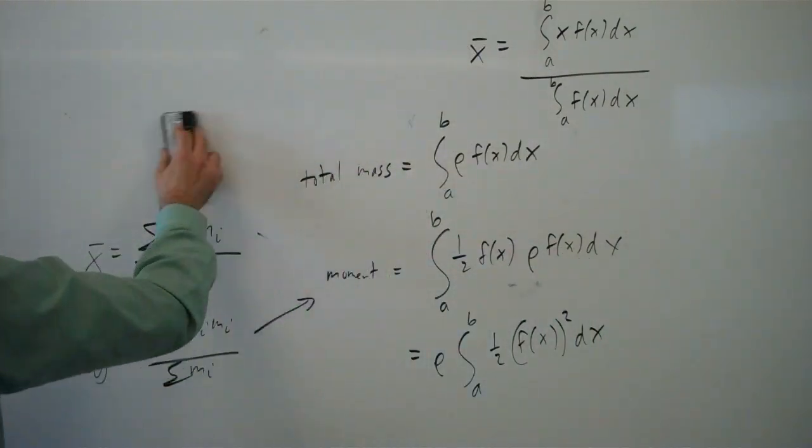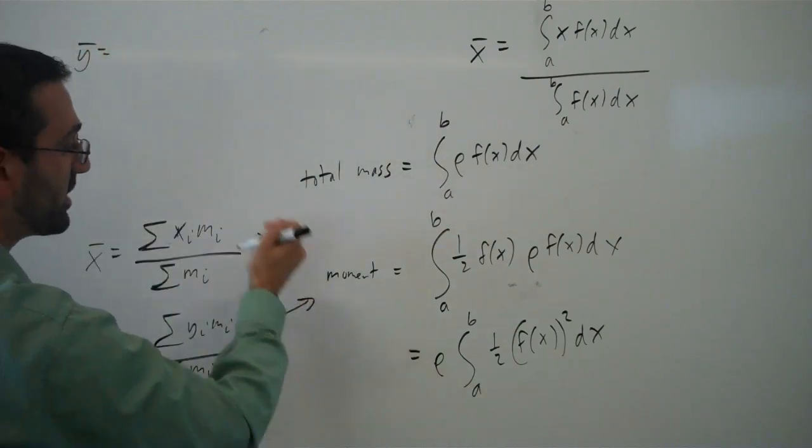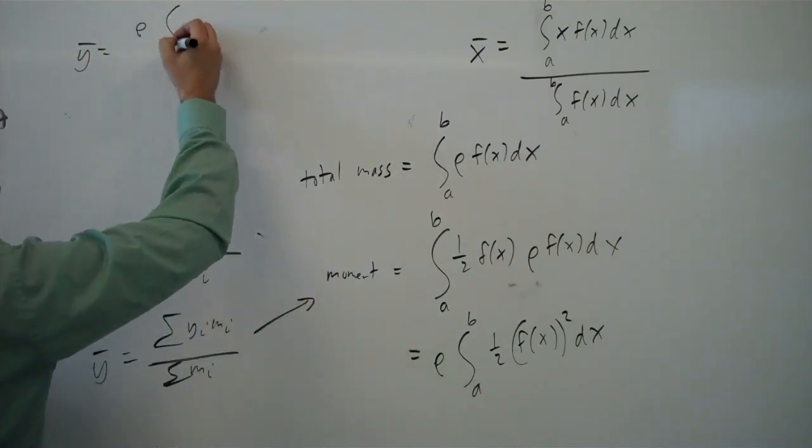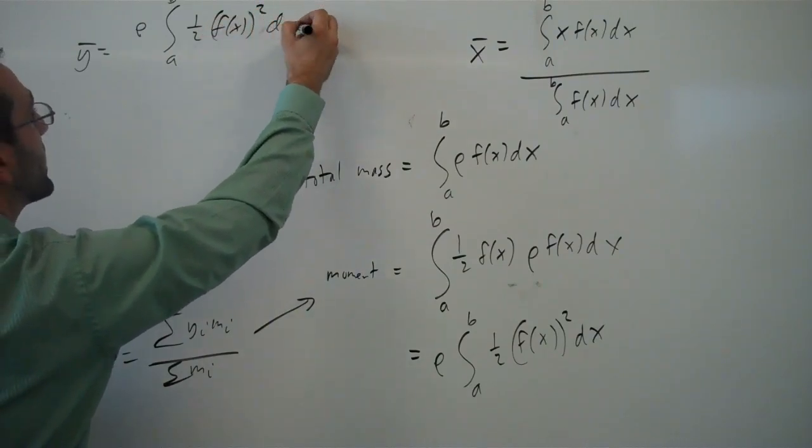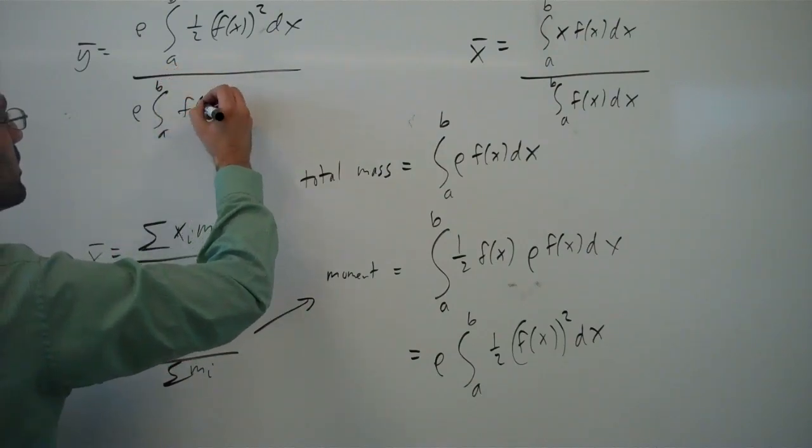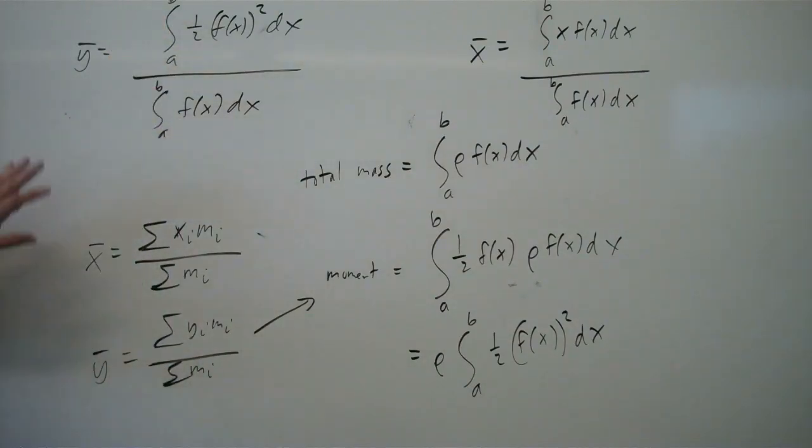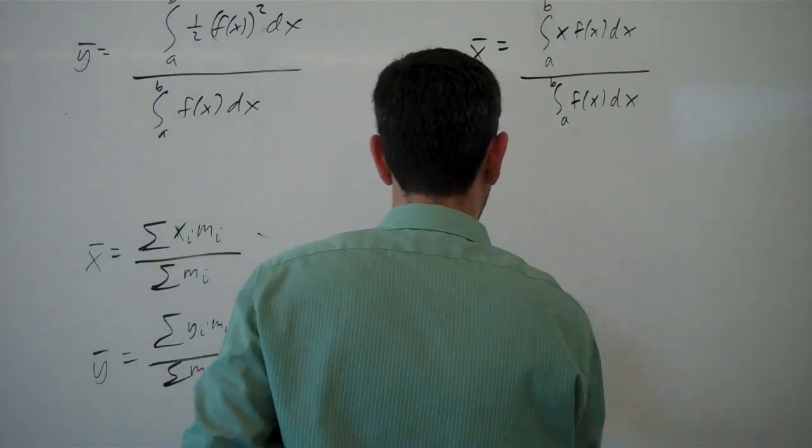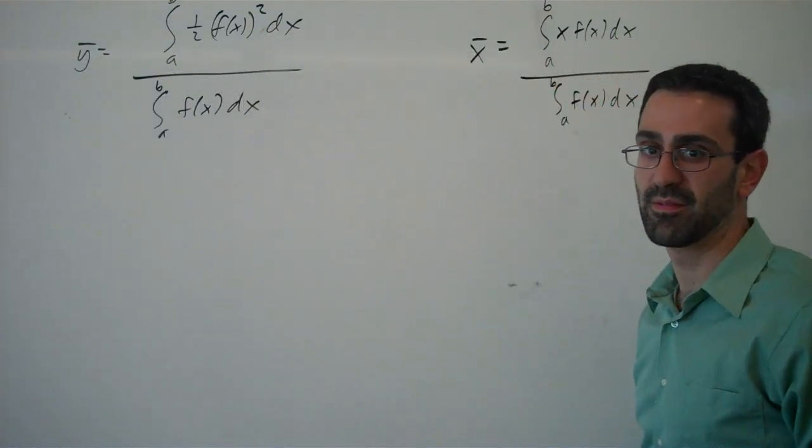So putting that together with our mass integral, the equation for y bar is going to be rho times the integral from a to b, one half f of x squared dx over the mass. And as happened with the x bar, the rhos are going to cancel, and we'll just be left with this as the y bar center of mass in the y direction equation for a lamina. Here we go.